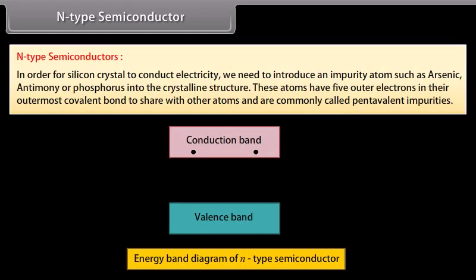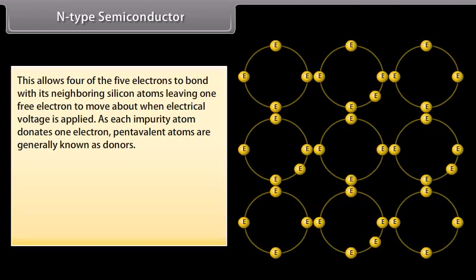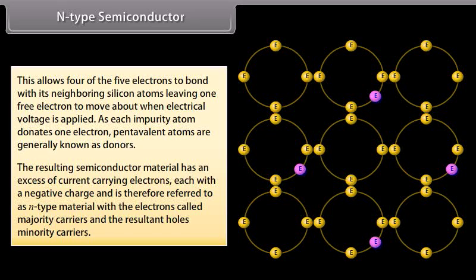For a silicon crystal to conduct electricity, we introduce an impurity atom such as arsenic, antimony or phosphorus into the crystalline structure. These atoms have five outer electrons in their outermost covalent bond to share with other atoms and are called pentavalent impurities. This allows four of the five electrons to bond with neighboring silicon atoms, leaving one free electron. As each impurity atom donates one electron, pentavalent atoms are generally known as donors. The resulting material has excess current-carrying electrons with a negative charge, referred to as N-type material, with electrons called majority carriers and holes called minority carriers.